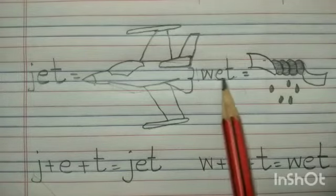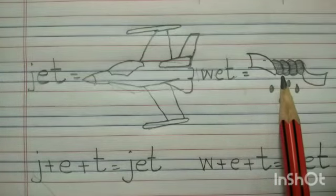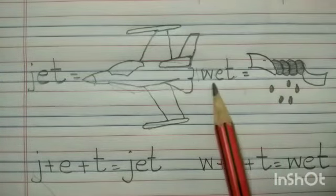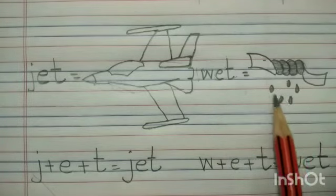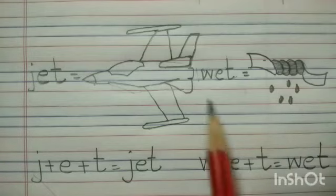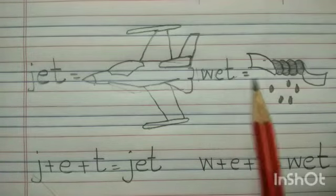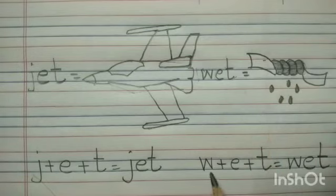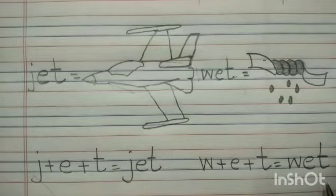The next word is Wet. Wet means when the clothes are soaked in water, it becomes wet. Can you see? This is a towel and these are drops of water. So the spelling is W-E-T, Wet. This word also has 3 letters — first letter, second letter, and third letter. W plus E plus T is W-E-T, Wet.